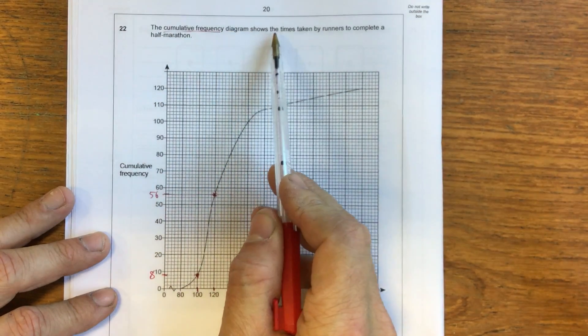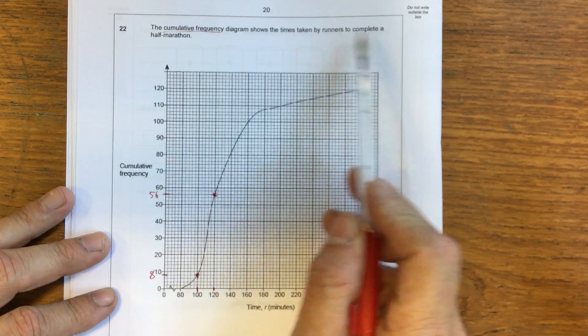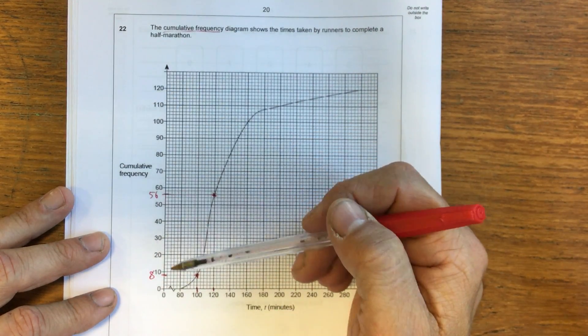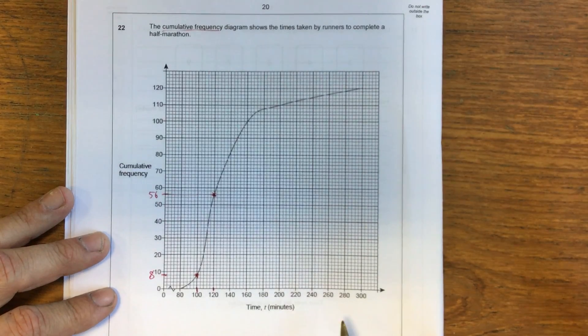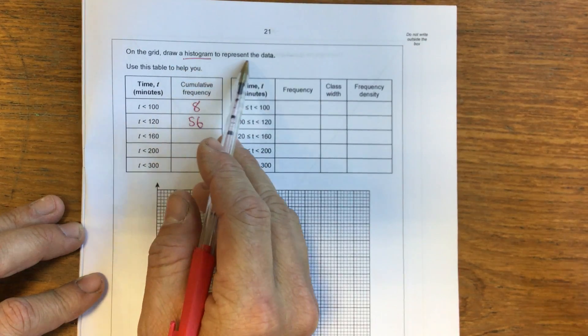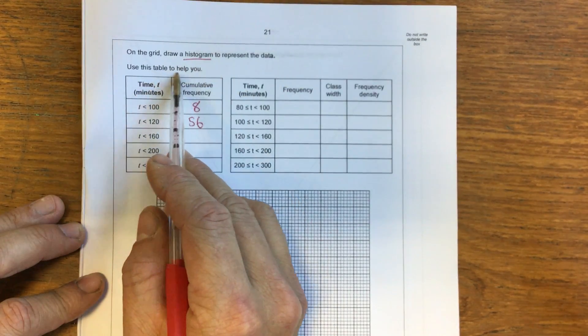The cumulative frequency diagram shows the times taken by runners to complete a half marathon. We've got cumulative frequency on the vertical axis and time across the horizontal axis. It says on the grid draw a histogram to represent the data. Use this table to help you.